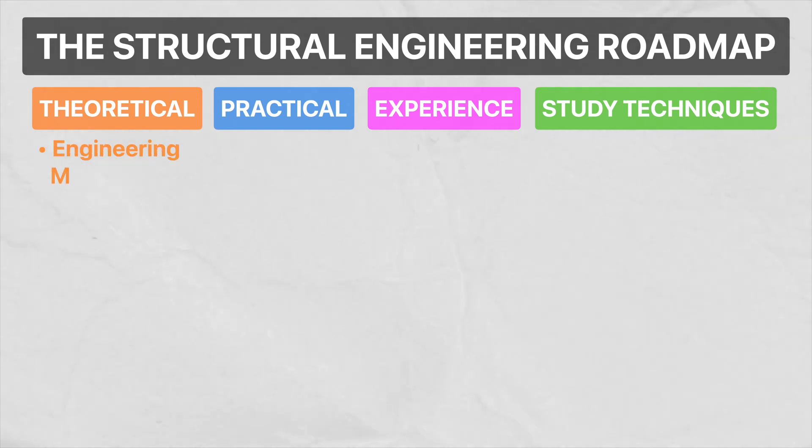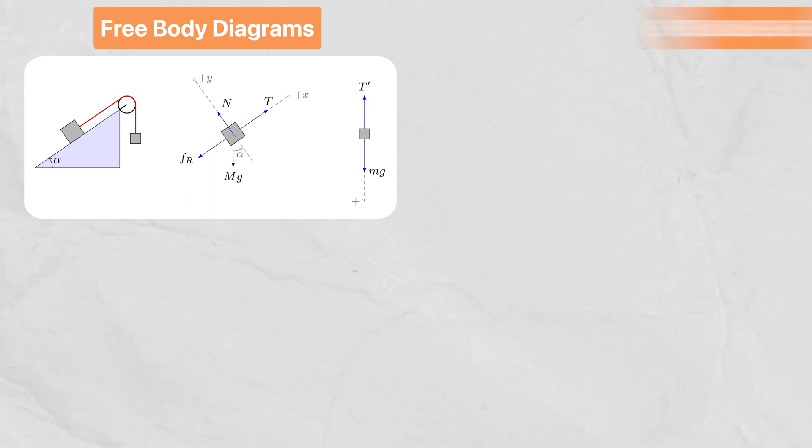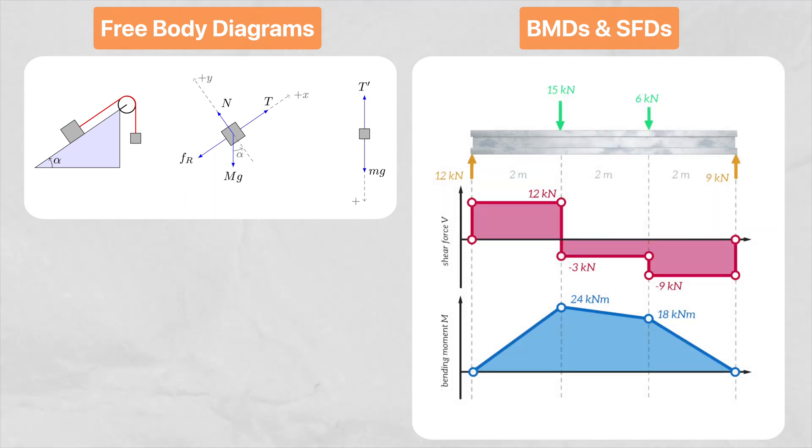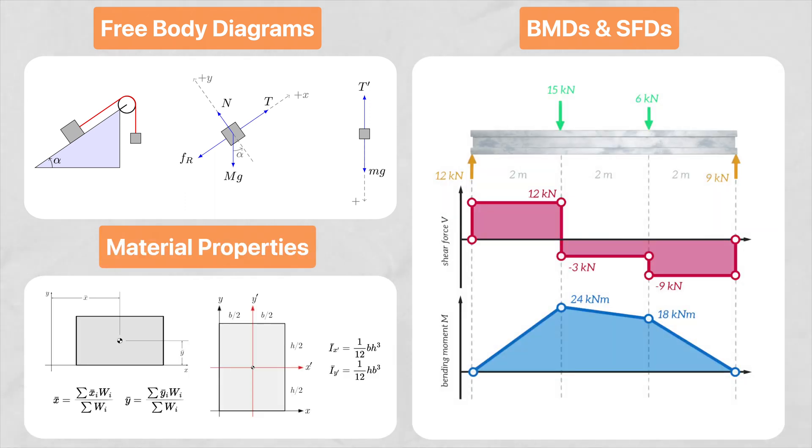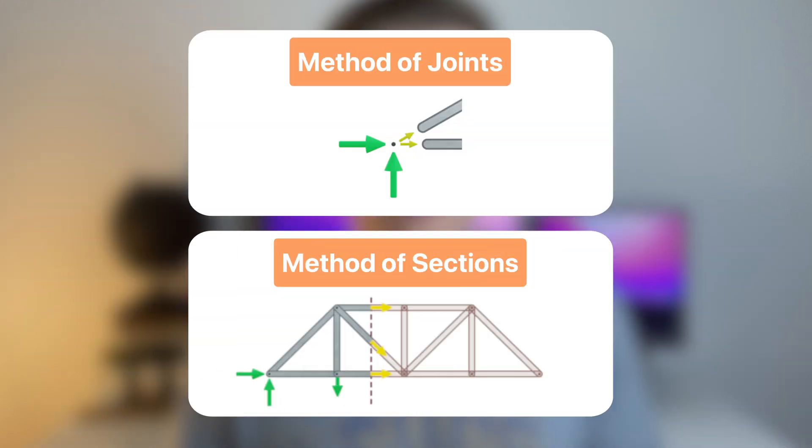Okay, so starting with the theoretical column, the first thing that I would learn is engineering mechanics. Here, I would focus on mastering things like solving free body diagrams, drawing bending moment and shear force diagrams, and also how to find and calculate material properties like the centre of gravity and the second moment of area. Also, another thing that's important to learn here is the analysis of trusses, of which there are two ways, which are the method of joints and the method of sections.